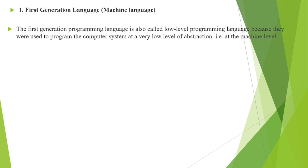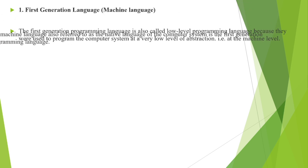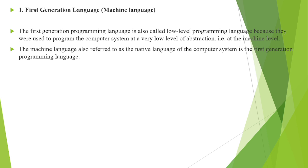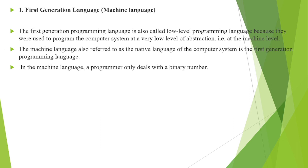The first generation is machine language. As discussed in the previous video, machine language is the computer's mother tongue. The first generation programming language is also called a low-level programming language because it operates at a very low level of abstraction — at the machine level. It is referred to as the native language of a computer, and the programmer only deals with binary numbers.